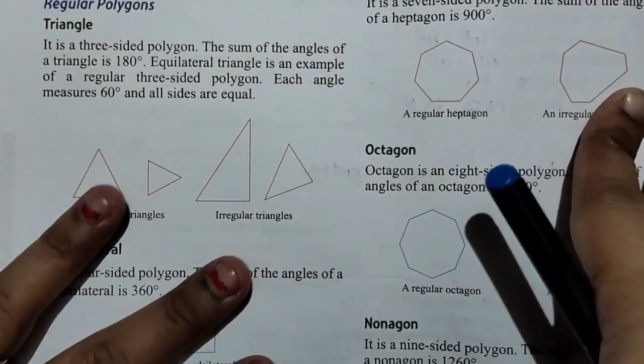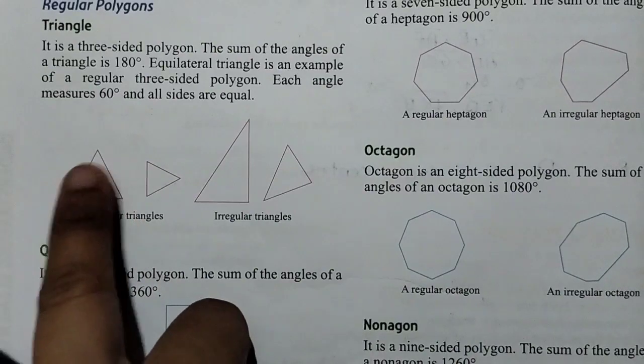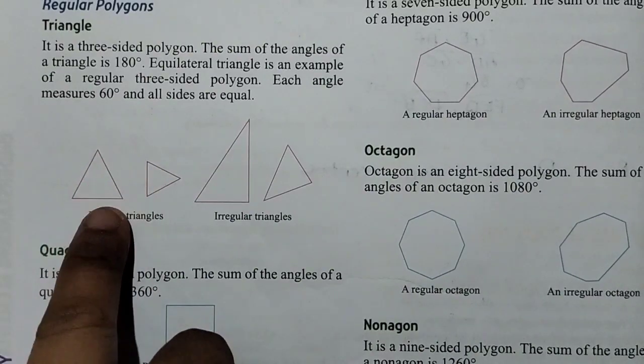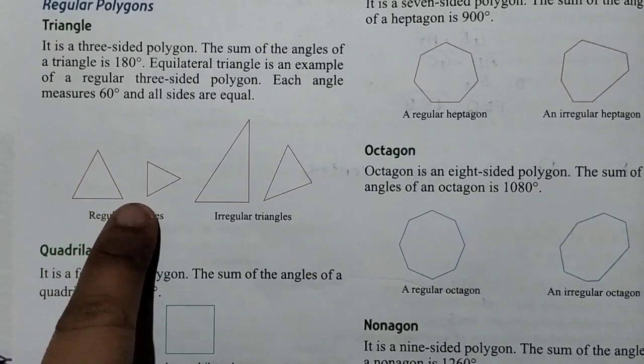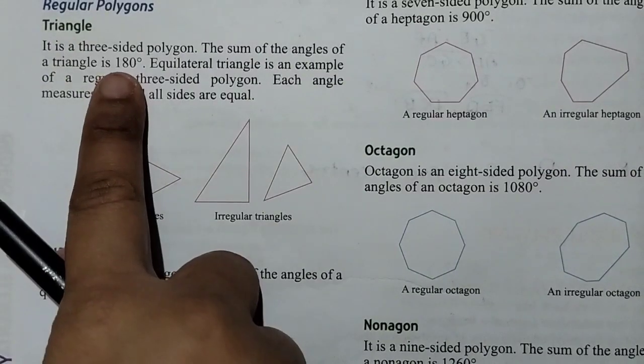The regular polygon is a triangle. This is a three-sided polygon because there are three sides and three angles. The sum of the angles of a triangle is 180 degrees.